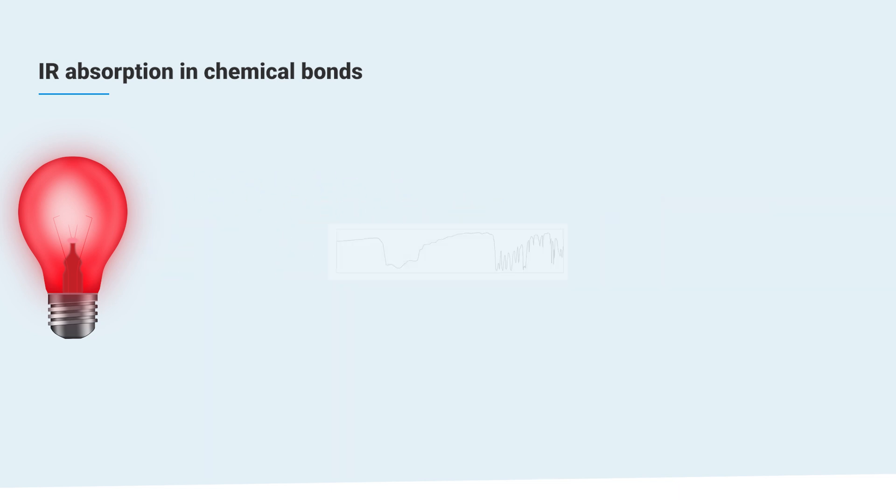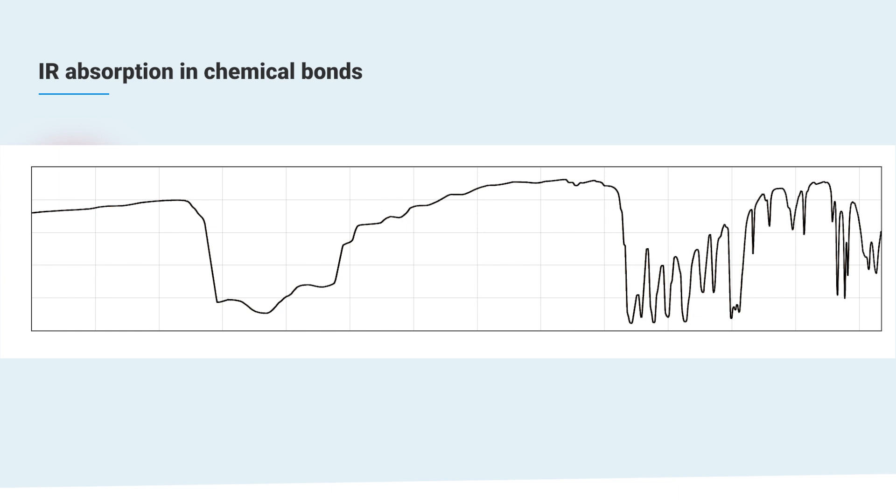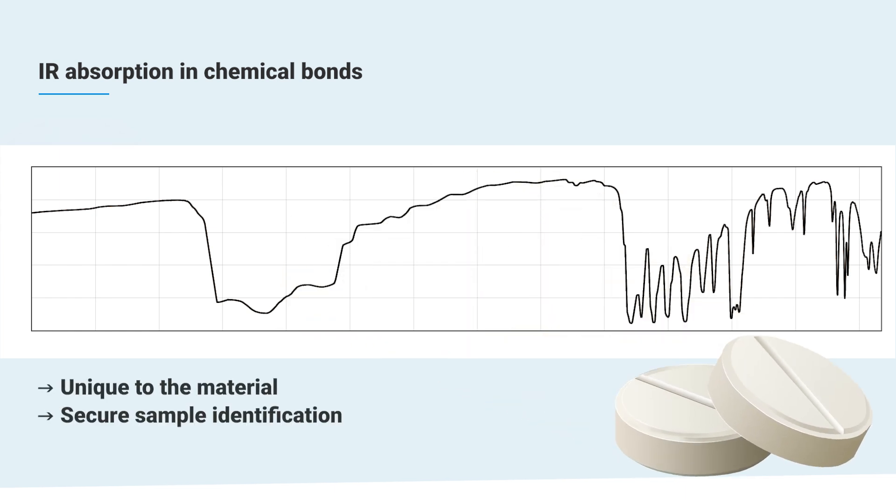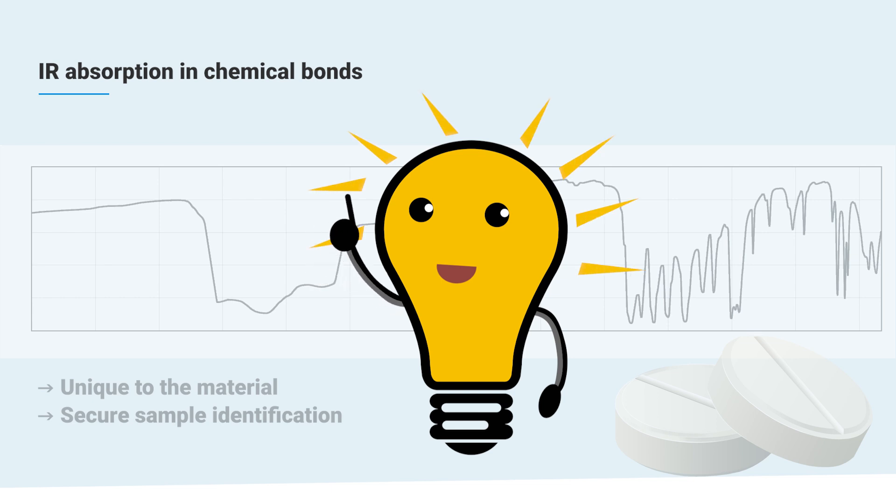This absorption pattern, or spectrum, is unique to the material investigated and thus helps us to identify the sample with very high confidence. Basically, that's all you need to know to grasp the concept of infrared spectroscopy.